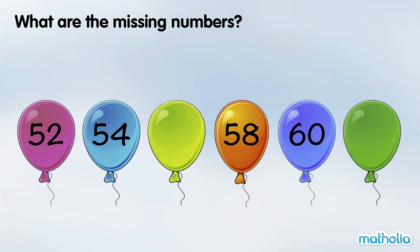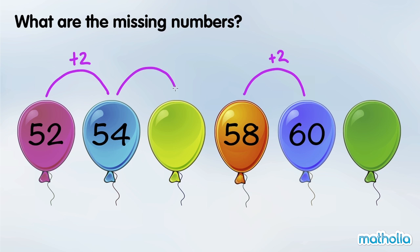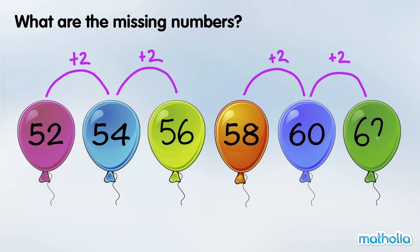What are the missing numbers? 52 plus 2 is 54. 58 plus 2 is 60. In each step the numbers go up by 2. 54 plus 2 is 56. 60 plus 2 is 62. The missing numbers are 56 and 62.